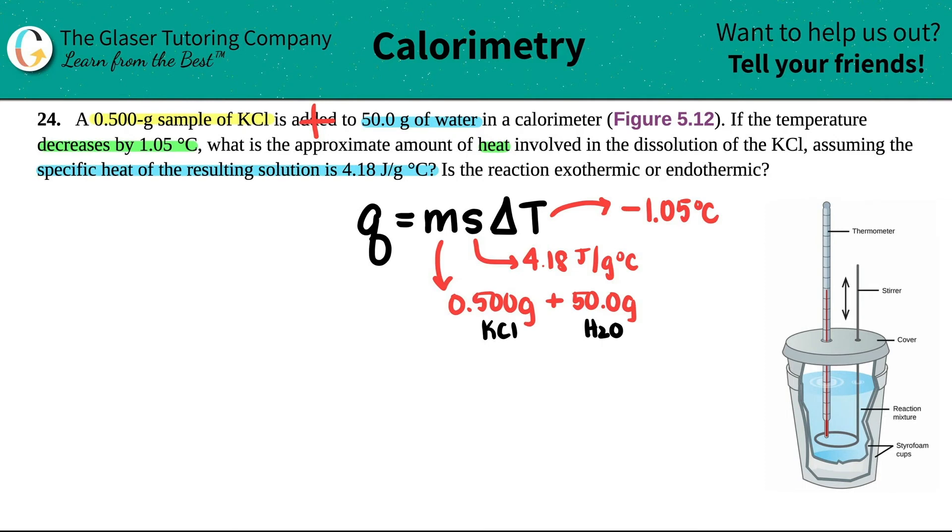So now let's figure out what this heat is. So it's going to be the addition of those. So it's going to be 50.5, 4.18, and then negative 1.05. Let me just clear this out. 50 times 4.18 times negative 1.05. And I get roughly, let's say we'll do three sig figs, so 222. 222 joules.